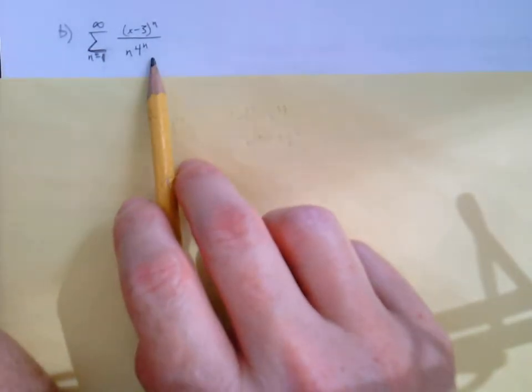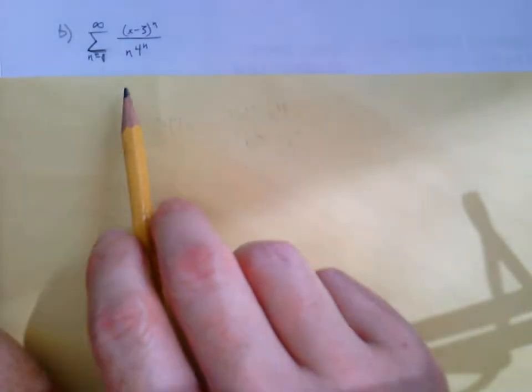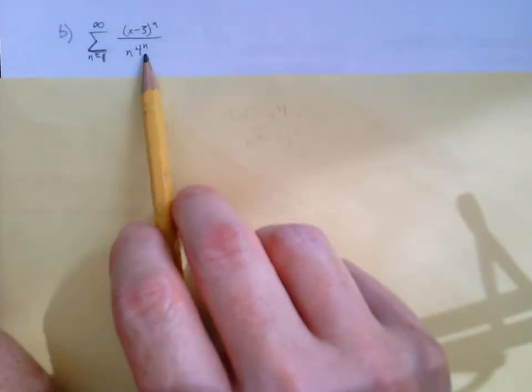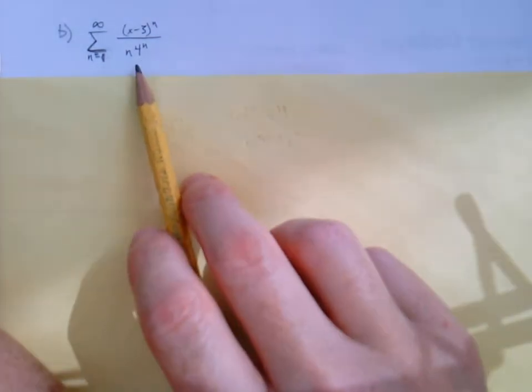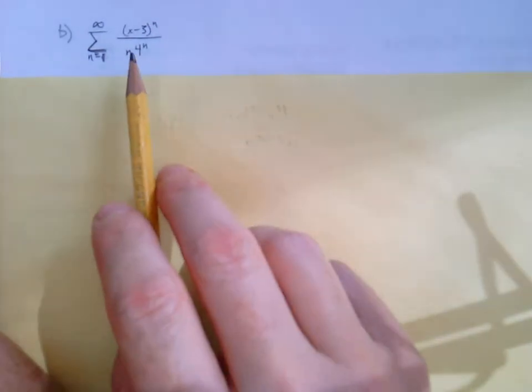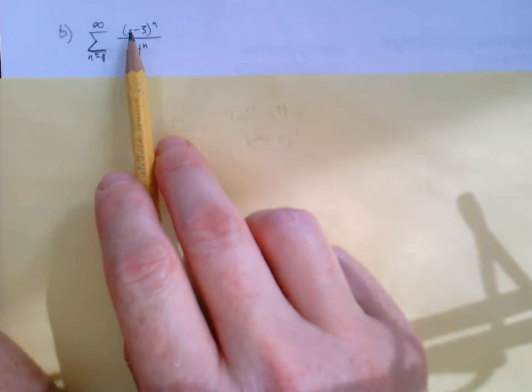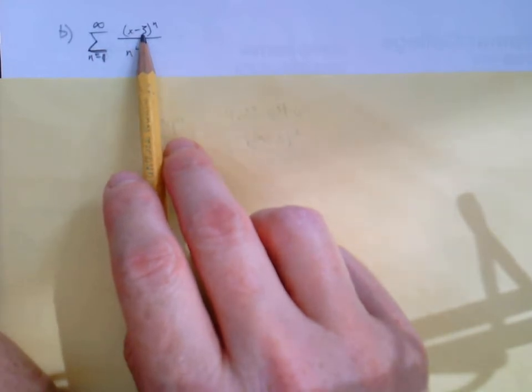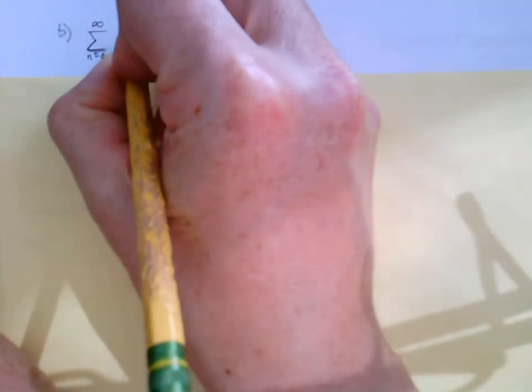Okay, well let's see how this is going to work. A lot more going on here: x minus 3 to the n over n times 4 to the n. Maybe first, if we were in class, I would ask this question: where is this power series centered? Well, we should look here at x minus 3. This power series is centered at 3, and that's absolutely right.